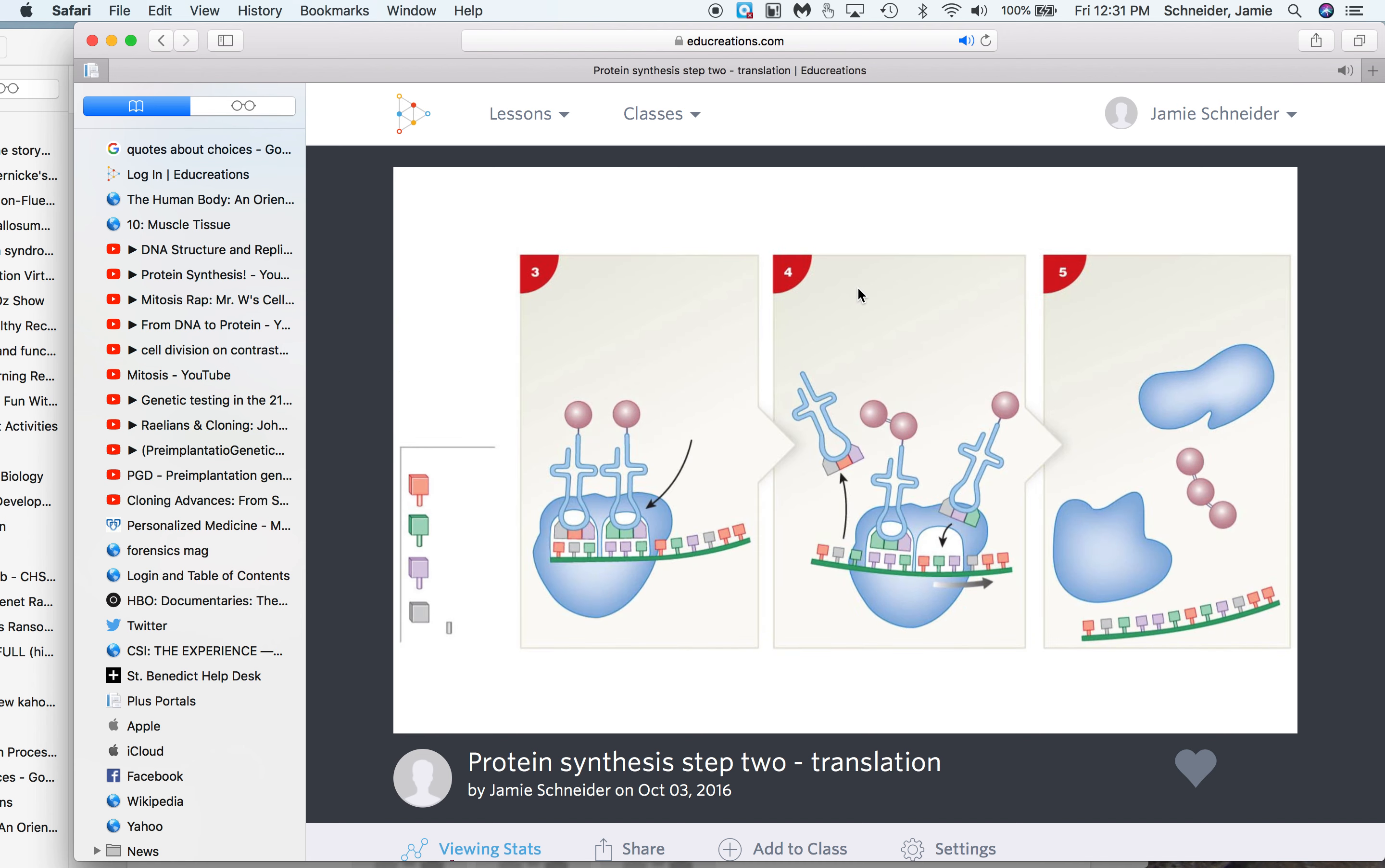Then what's going to happen is the two amino acids are close to each other, and a bond forms right here. The one that had the first amino acid is going to leave and go get another amino acid so it can continue to help make proteins.